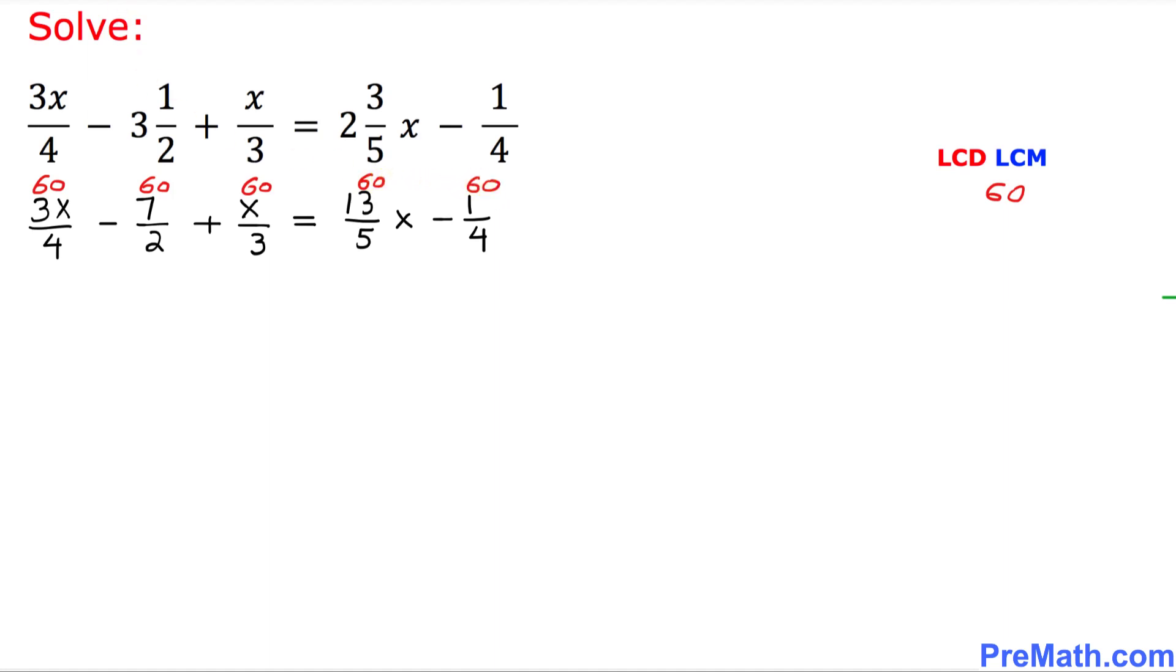All right, let's simplify now. As we can see, this 4 goes into 60 fifteen times. Here 2 goes into 60 thirty times. 3 goes into 60 twenty times.